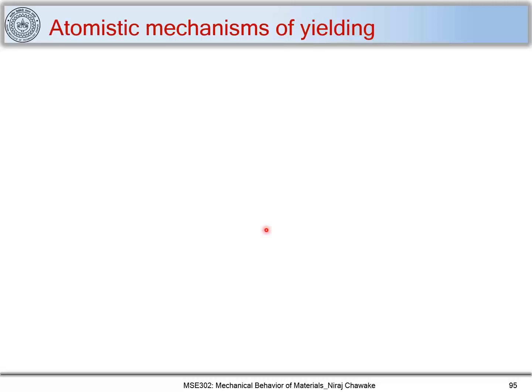In the last class, we have seen some yielding criteria which determines if I have a given stress state, I can figure out whether a material can yield or not if I know the yield stress using a uniaxial tensile test. Here we will be looking at what are the atomistic mechanisms of yielding — what exactly happens when a material undergoes plastic deformation.